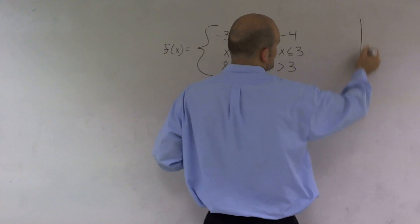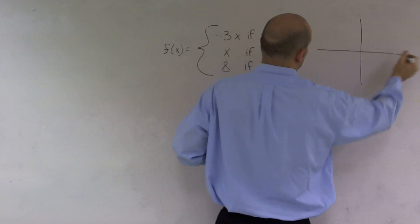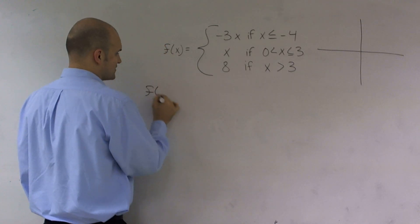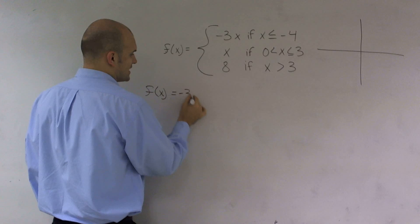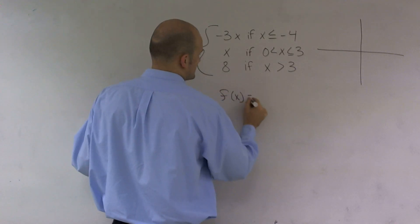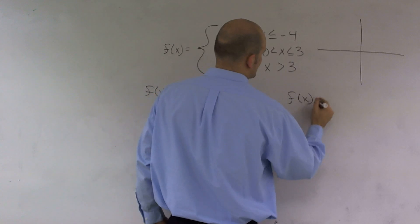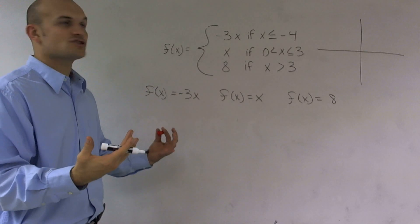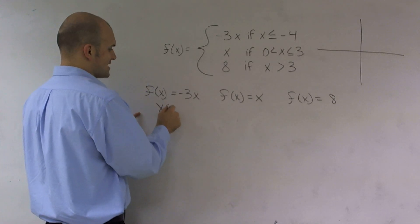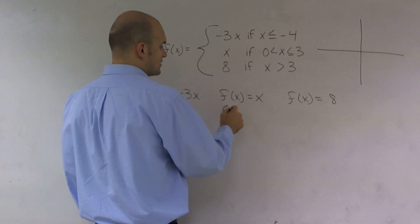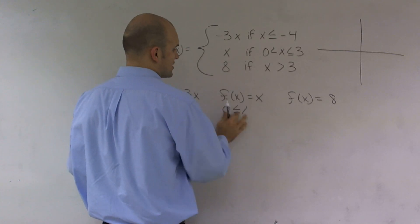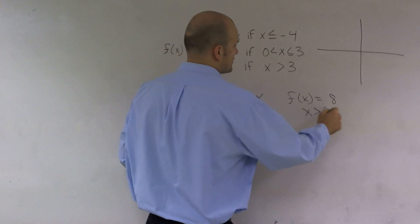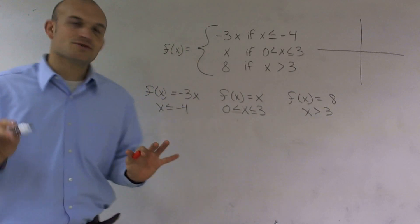I'm going to draw my final graph for the piecewise right here, but I want you to understand I can graph this as three separate functions. The piecewise function is f(x) = -3x, f(x) = x, and f(x) = 8. There's something special with piecewise functions: they have constraints. This first one's constraint is x ≤ -4. The second is 0 < x ≤ 3. And the third is x > 3. I'll get more into the constraints in a second.